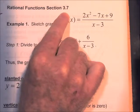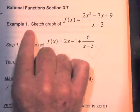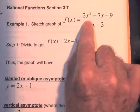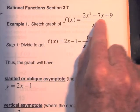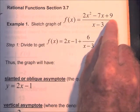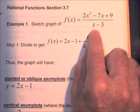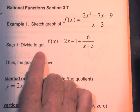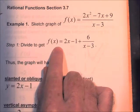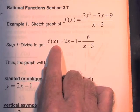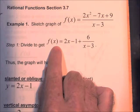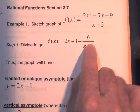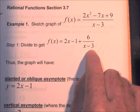Rational Functions, section 3.7. Sketch a graph of f of x equal to 2x squared minus 7x plus 9 over x minus 3. First step, do the long division to get f of x equal to 2x minus 1 plus 6 over x minus 3.